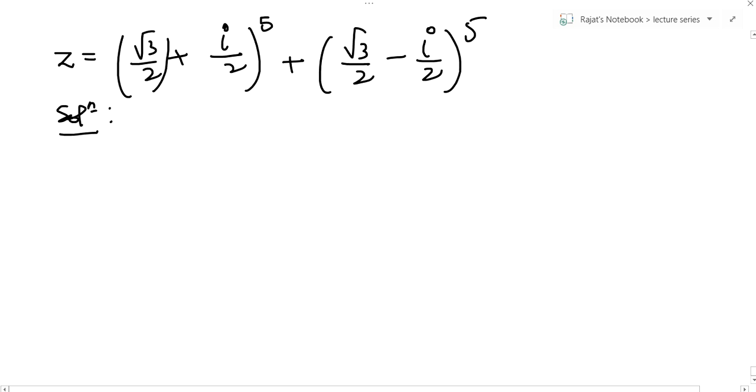Can I write this expression in polar form? Root 3 by 2 is nothing but cos 30 degree, and this can be written as i sin 30 degree to the power 5. The magnitude is 1. Root 3 by 2 whole square plus 1 by 2 whole square is 1, so I have skipped this.